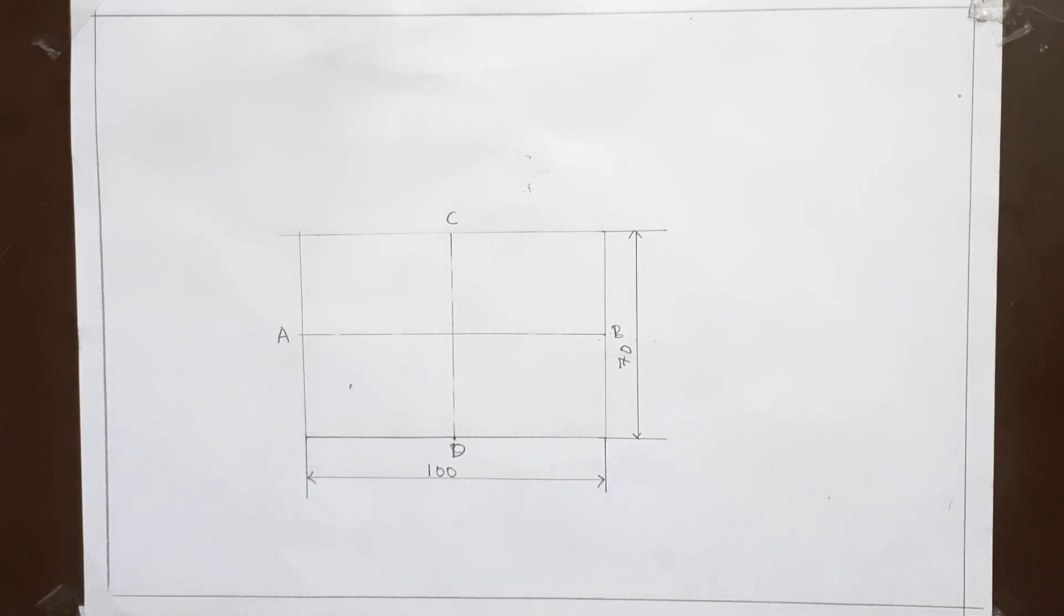Now I have divided this rectangle into 4 equal parts of A, B, C and D. Now A, B is the major axis of 100 mm and C, D is the minor axis of 70 mm.